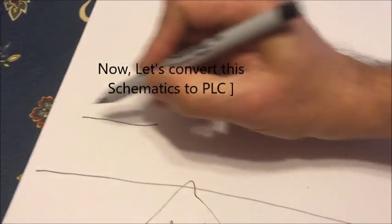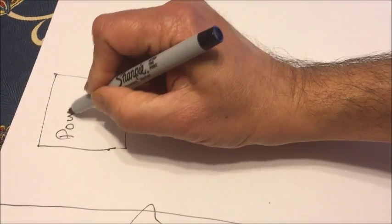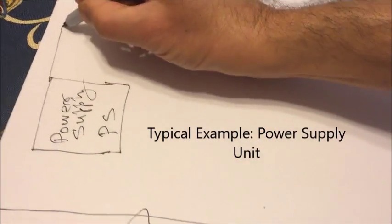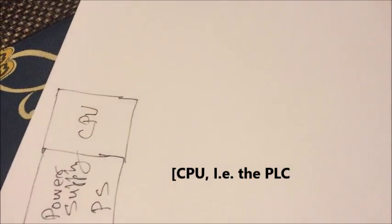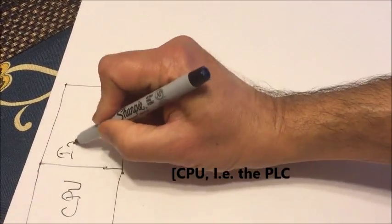The first step do the hardware part of it. Now typically most of the PLCs need a power supply module next to the CPU that is the actual PLC and for this example we need one digital input card and a digital output card.